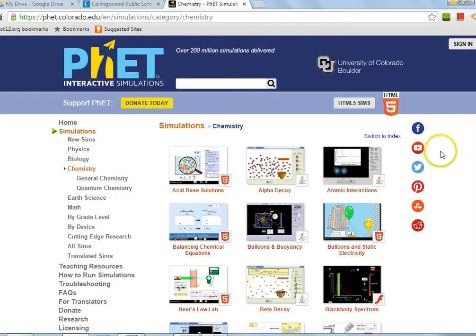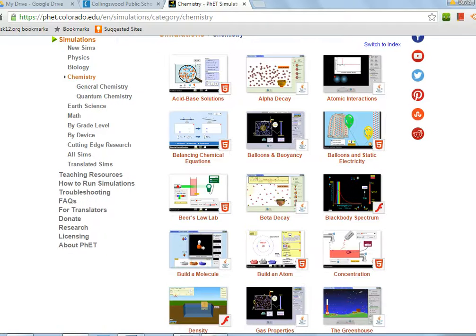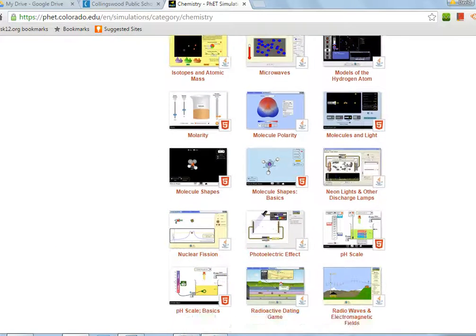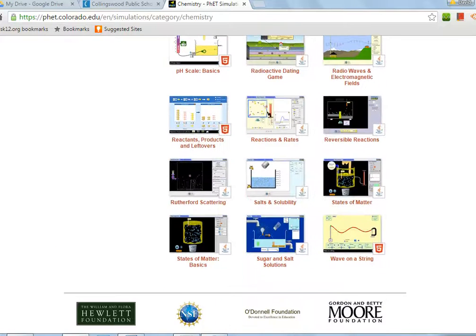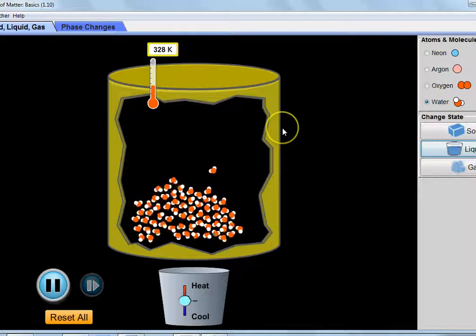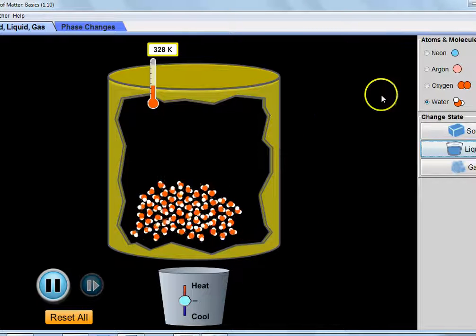And so chemistry, and then it lists a whole bunch of chemistry things, and the one that we're going to be specifically using today is this States of Matter Basic. So if you click on that, it'll ask you if you want to run it. It uses Java, so make sure you have Java enabled on your computer, and then when you open it up, you'll get something that looks like this.